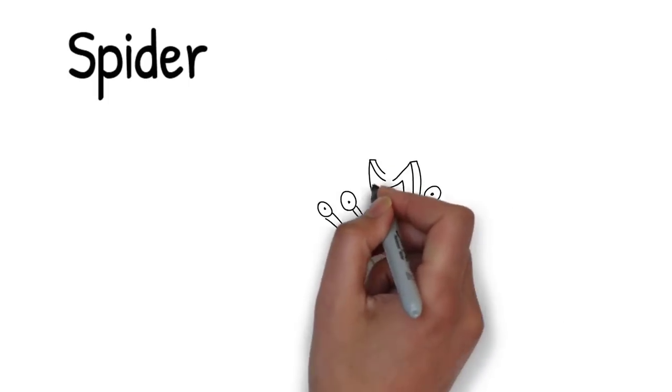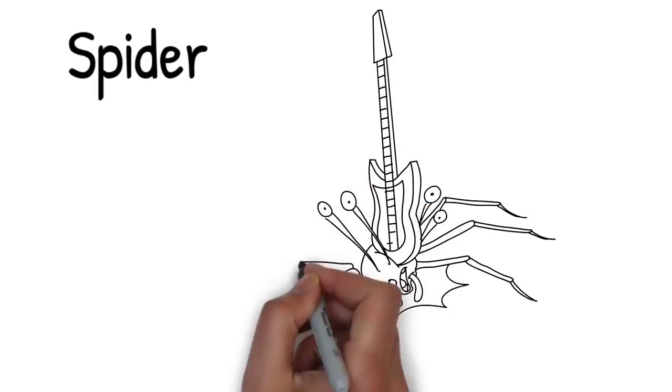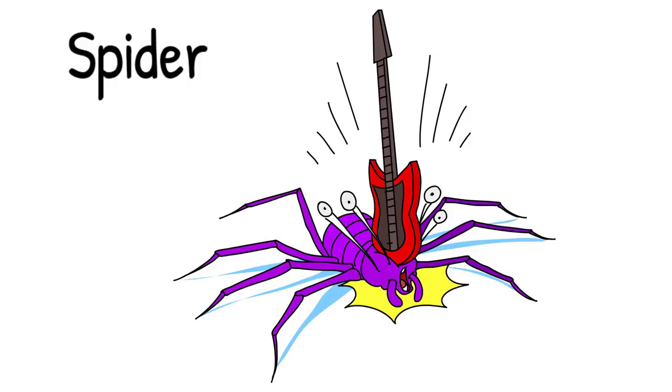The dinosaur finishes the song in true rock style by smashing the guitar but accidentally crushes a large spider. That's no way to treat your fans even if they are a spider.